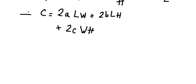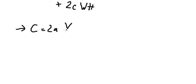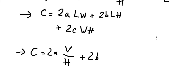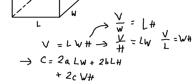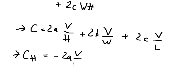Now we substitute into the cost function. We change LW into V over H, we change LH into V over W, and we change WH into V over L. So we now have C in terms of one variable at a time. Taking the first derivative of C with respect to H, we get negative 2a multiplied by V over H squared.